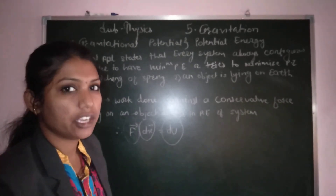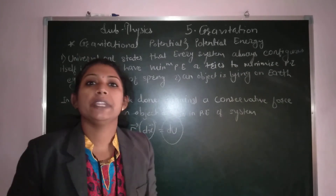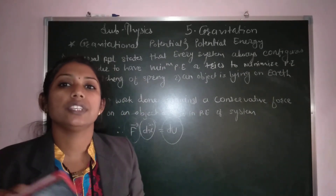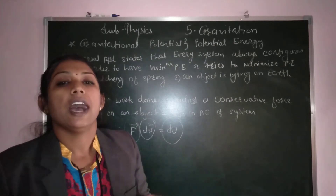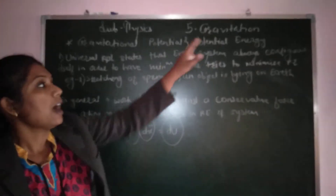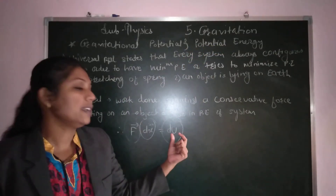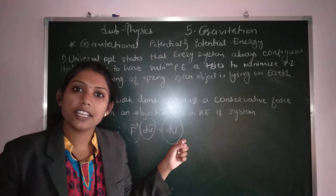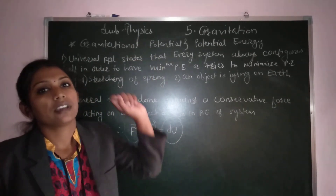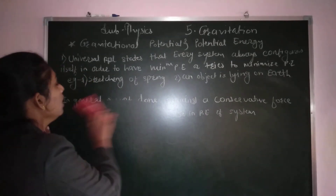Now we will take one derivation to find out the formula for potential energy. The gravitational force is F equals GMm upon r squared. We will use this gravitational force in the formula to find out the potential energy U, and from that potential energy we will find out the gravitational potential.